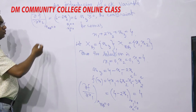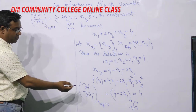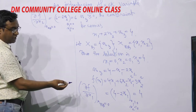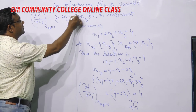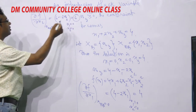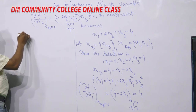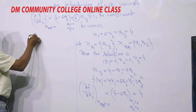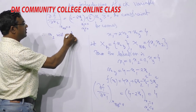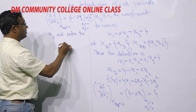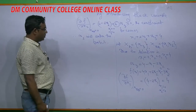Both partial derivatives with respect to x1 and x2 are positive. We take the largest one, which is 6. This 6 corresponds to the non-basic variable x2. Therefore, x2 will enter the basis.